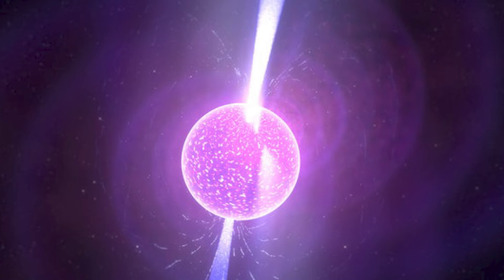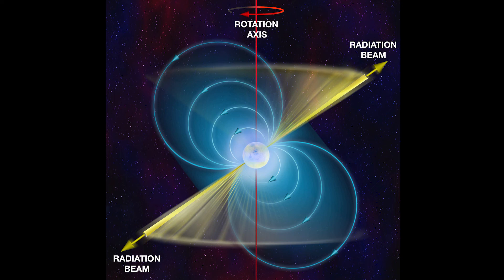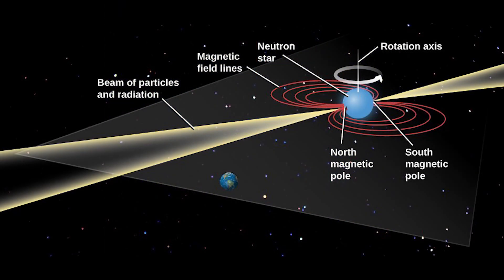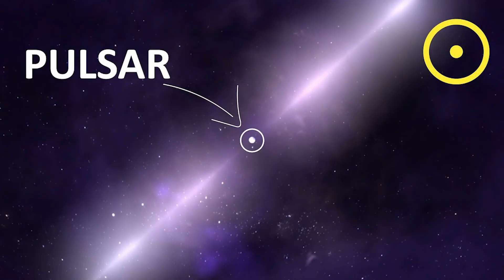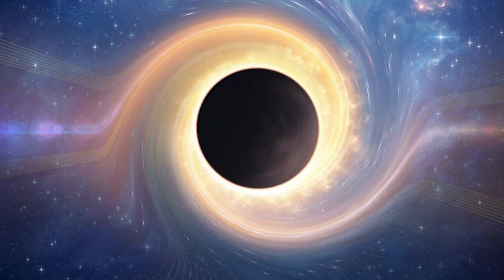Those beams sweep around like massive searchlight beams as the star rotates. If such a beam is oriented so that it periodically points toward the Earth, we observe it as regular pulses of radiation that occur whenever the magnetic pole sweeps past the line of sight. In this case, the neutron star is known as a pulsar.